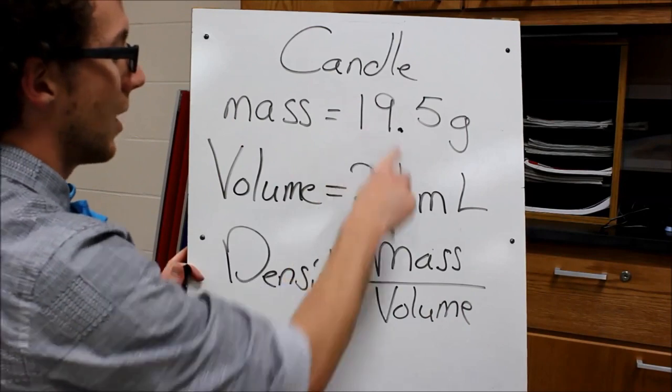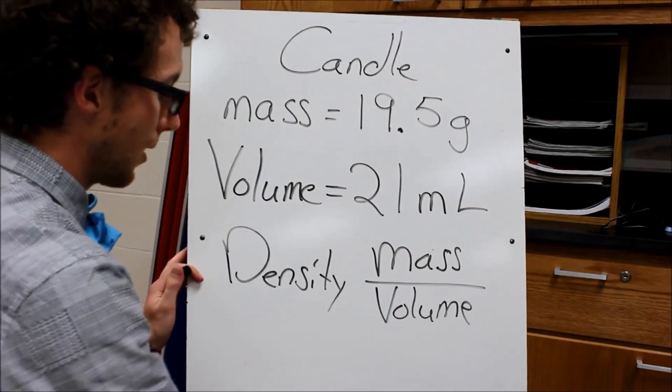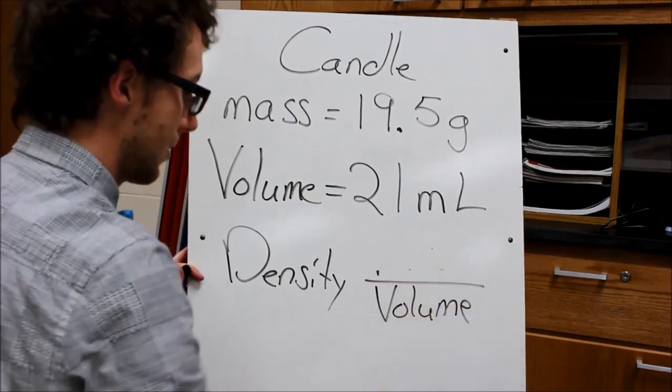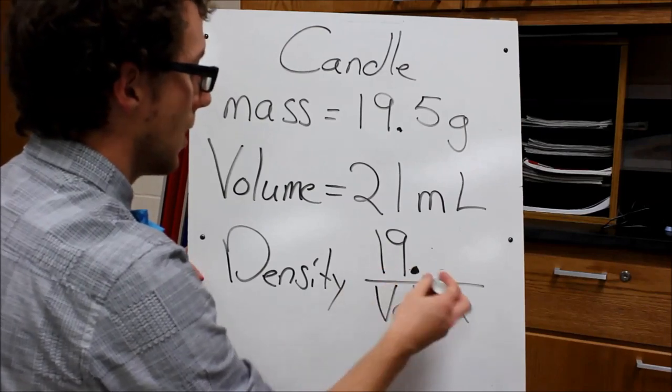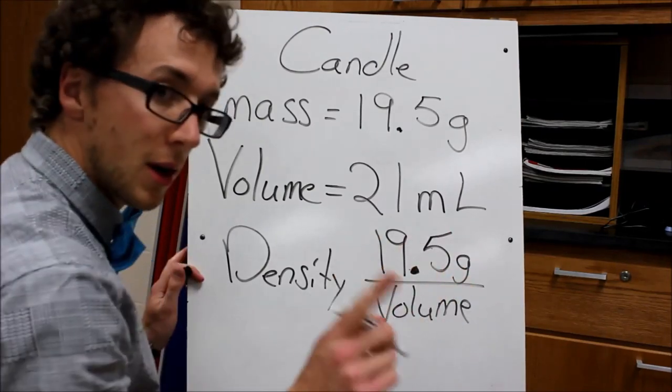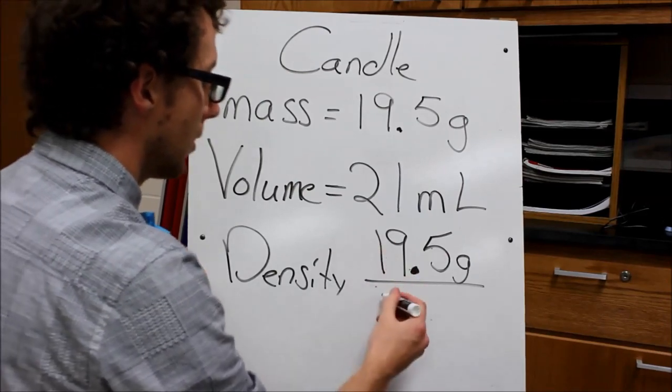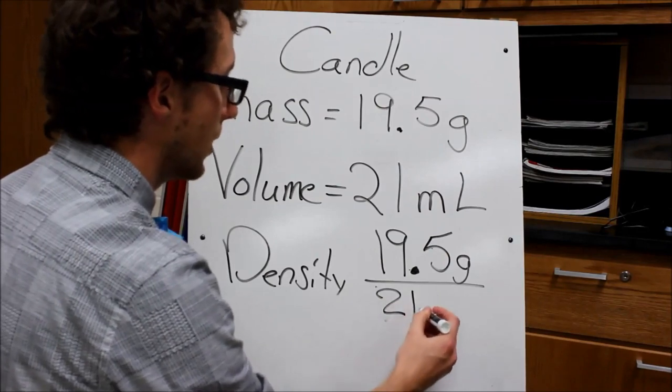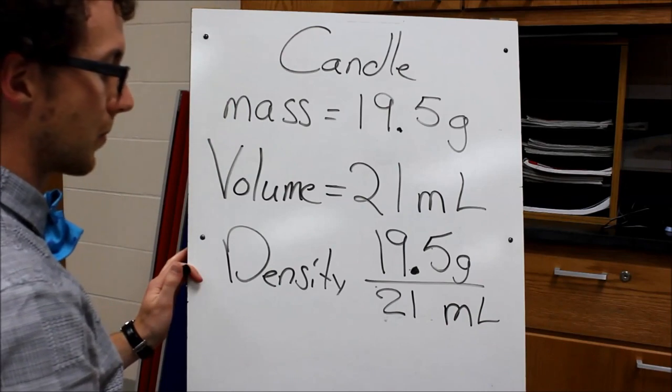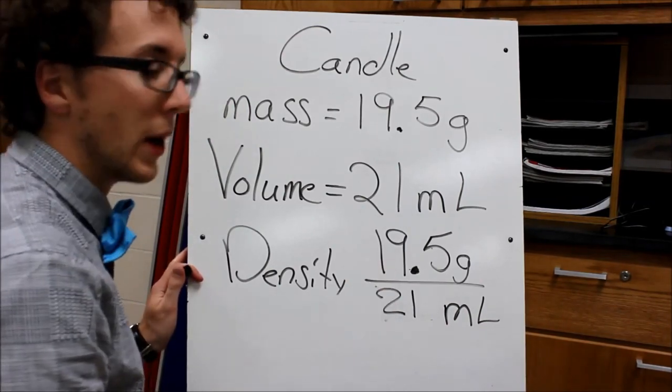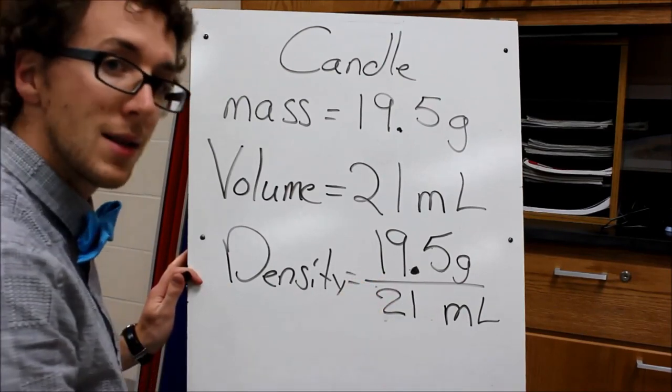So I have a mass, and I have a volume, so I'm able to calculate these values. So I'm just going to replace the mass. 19.5 grams. I want to make sure I label. And then with my volume, 21 milliliters. Now I can use my calculator at this point to calculate my value, and it would get me my density.